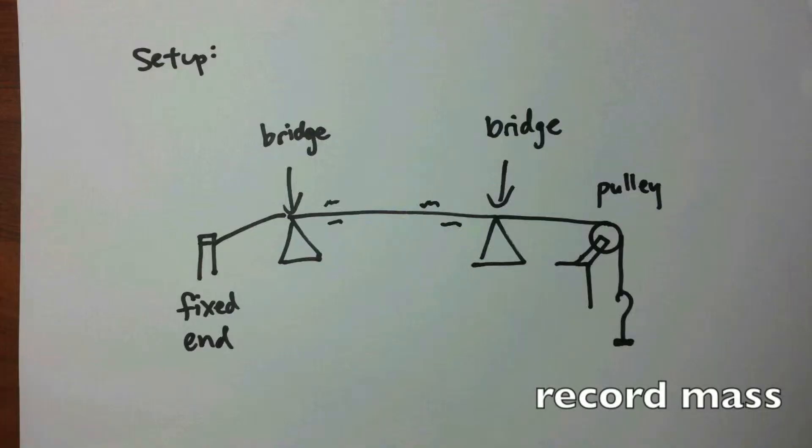Record the mass of the mass hanger M and determine its weight. The weight, Mg, is taken to be equal to the tension T on the string.